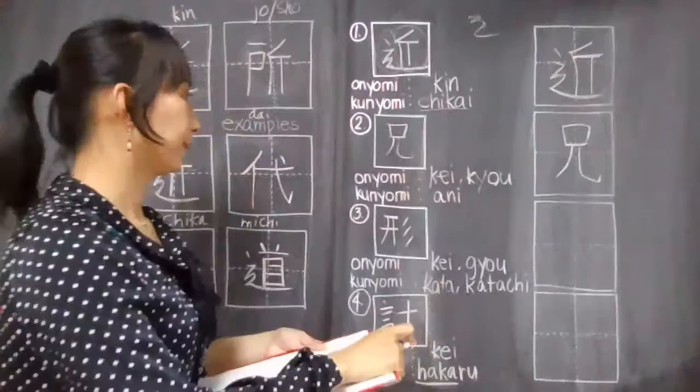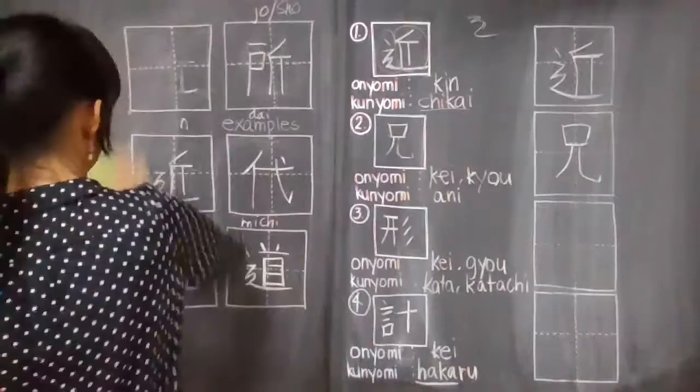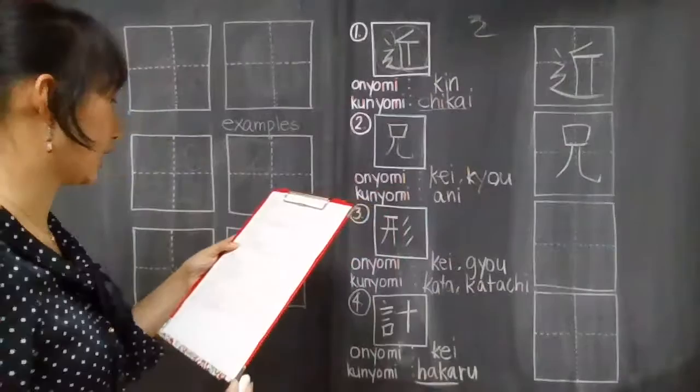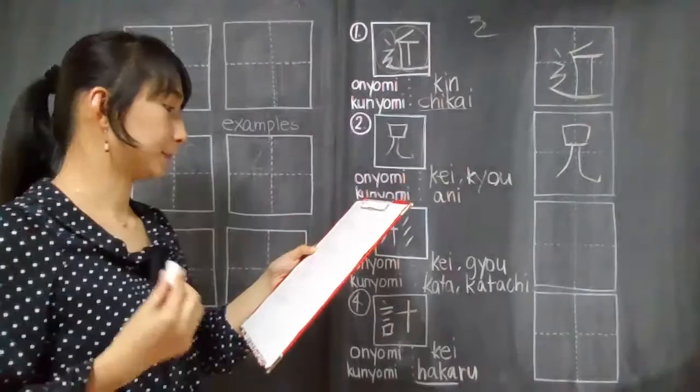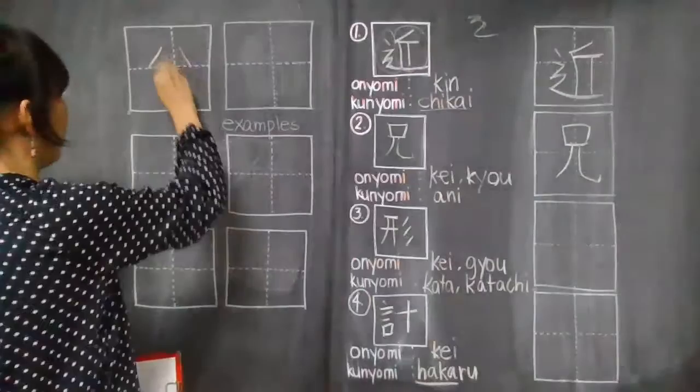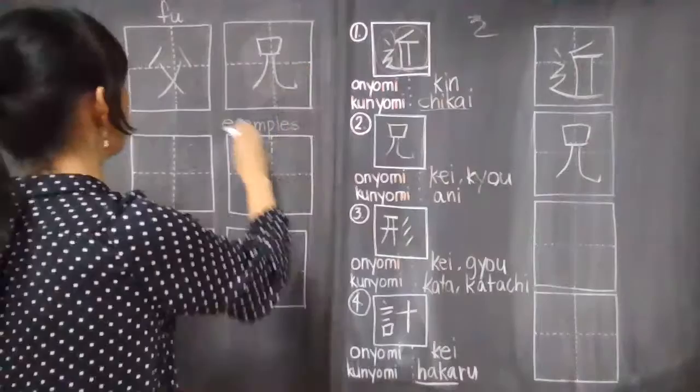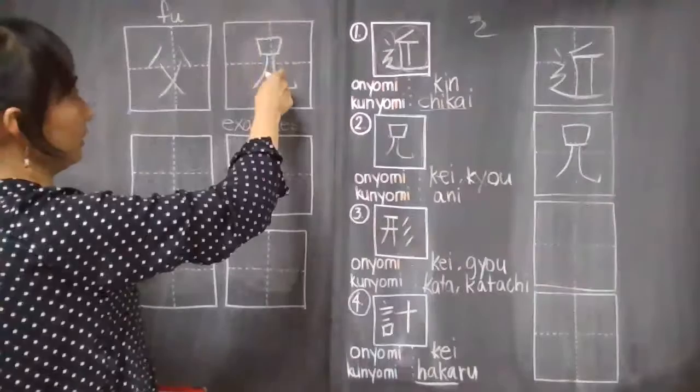The examples that I have for you for our kei-kyo no kanji are fuke. Guys, fuke means guardian. So the fu for this is the kanji for chichi or father, otosan no kanji. One, two, three, four. So this is already fu. Kei. So father kind of like related to a family member. So fuke means guardian.